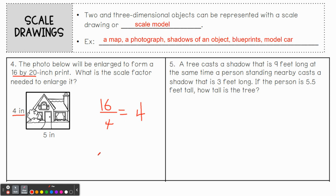Number five: A tree casts a shadow that is nine feet long. At the same time, a person standing nearby casts a shadow that is three feet long. This relates to measuring shadows — we measured a person's height and shadow, then used those to find heights of larger objects. If the person is 5.5 feet tall, how tall is the tree? We use proportions. The person's height is 5.5 feet and their shadow is three feet.